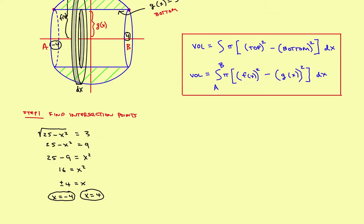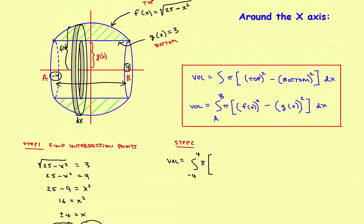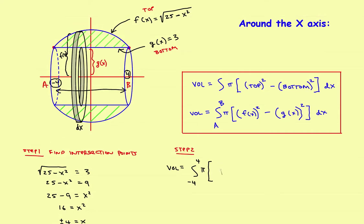Now it's just a matter of evaluating the integral — Step 2. The volume equals the integral from negative 4 to 4 of pi times the top function squared minus the bottom function squared. The top function is the square root of 25 minus x squared, so that gets squared. Then minus g of x, which is 3, squared. Integrate with respect to x.